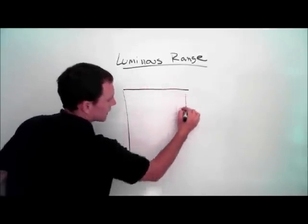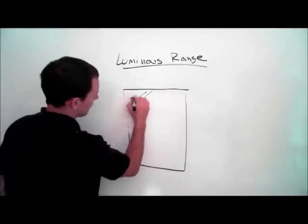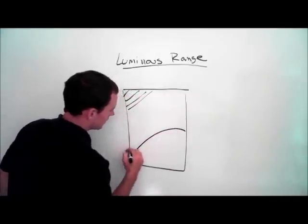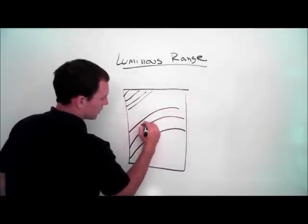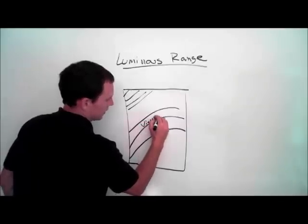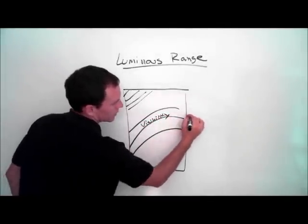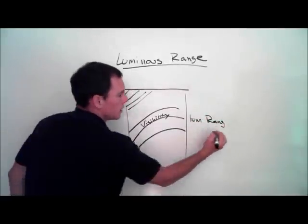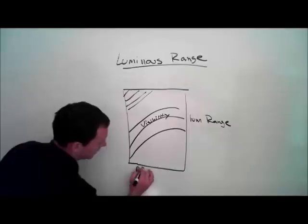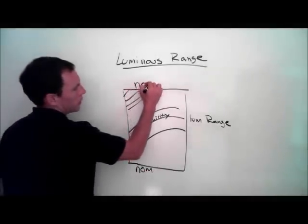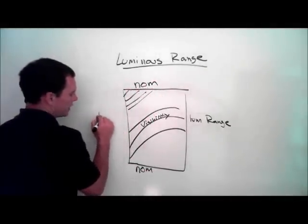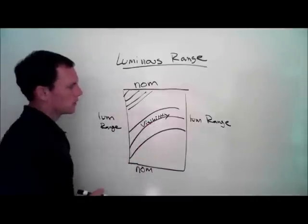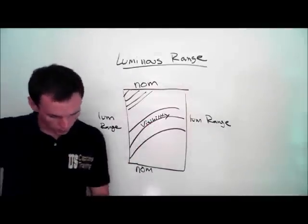The chart looks like this. There's a blacked-out portion, and then it has visibility curves. It has the luminous range on the sides and nominal range on the top and bottom. So the top and bottom are nominal range, the two sides are luminous range, and we have these visibility curves. Now let's solve the first problem we just read.